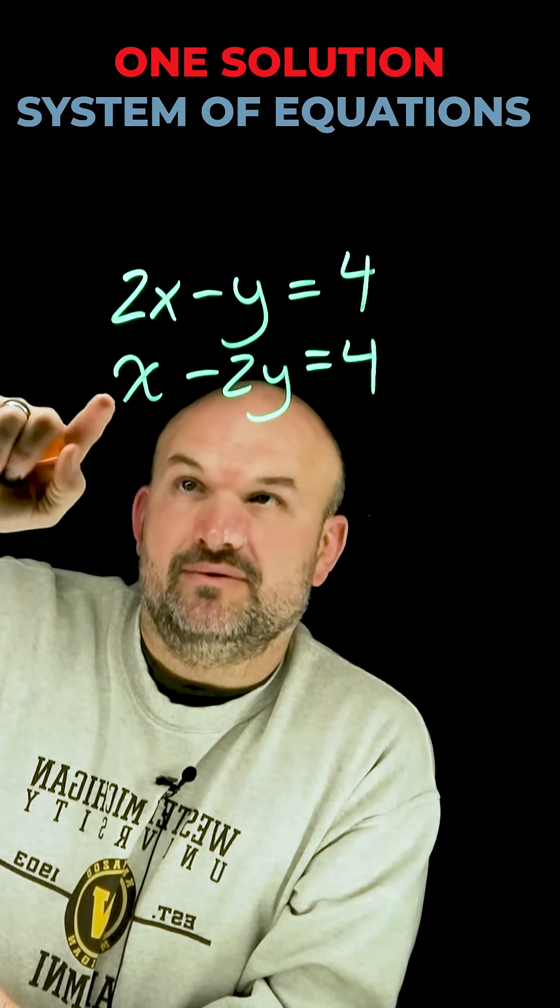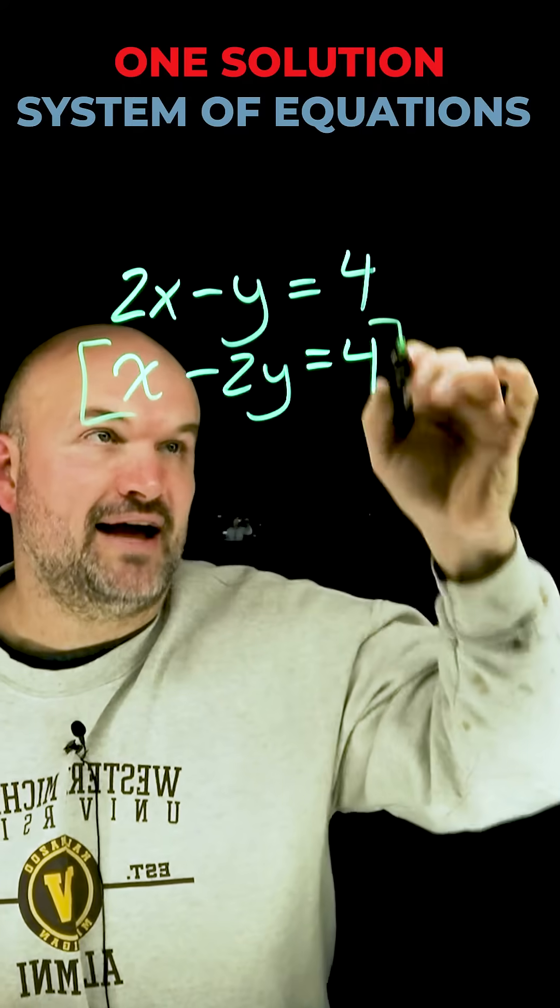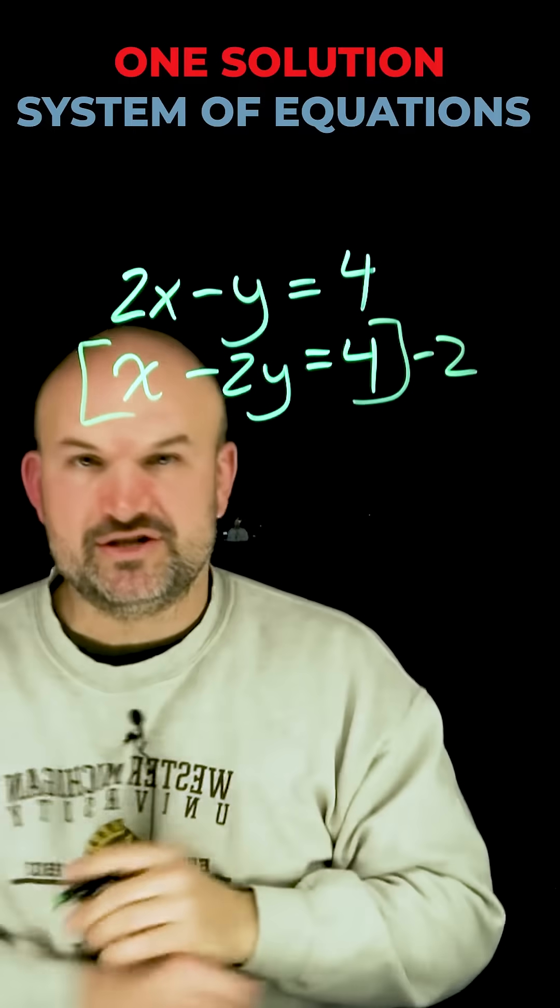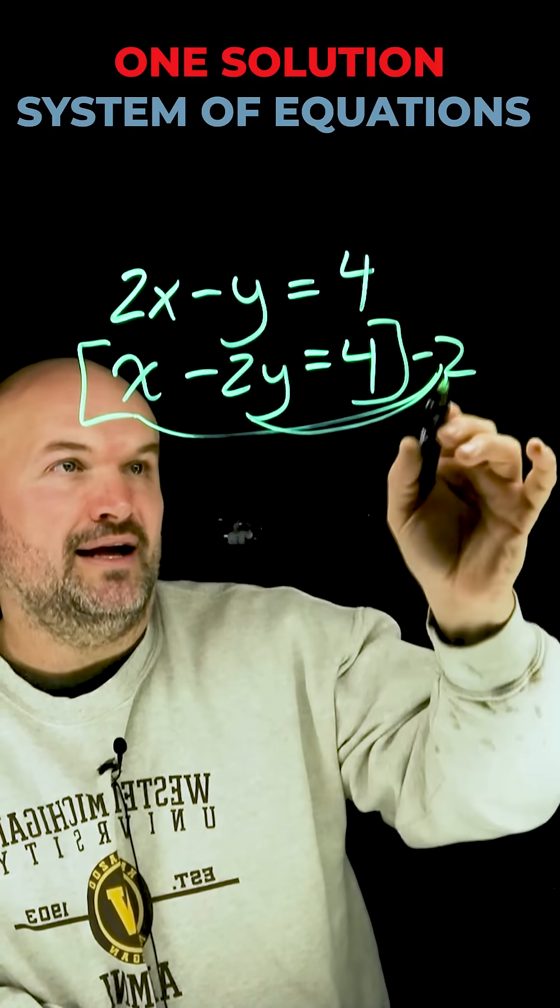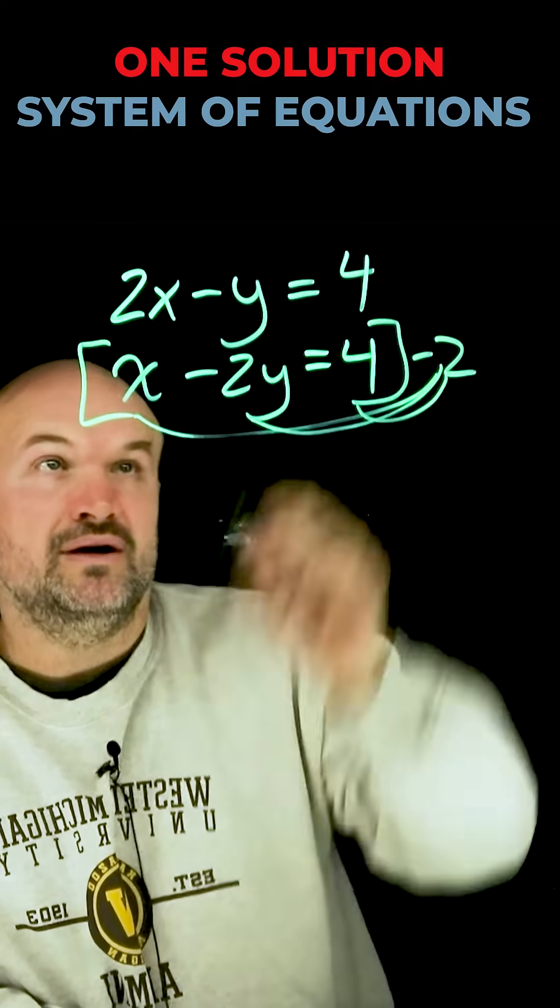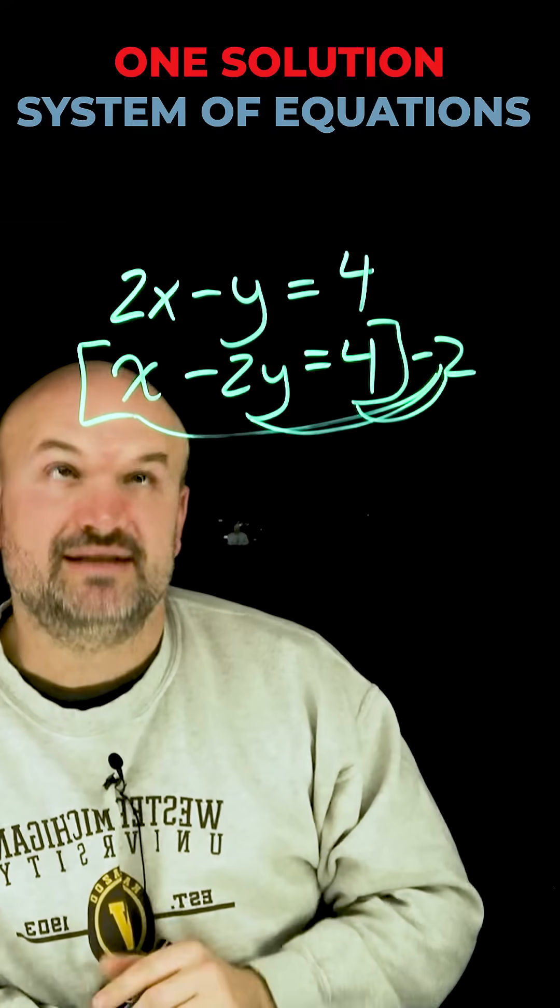So here you can see I have a positive two. That means I want to make this a negative two. But I can't randomly pull a negative two out of a hat. I need to multiply the whole equation by negative two. So I'm going to multiply negative two times x, negative two times negative two y, and negative two times four. Since I'm not doing anything with this top equation, I'm just going to go ahead and rewrite it down below.